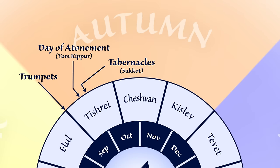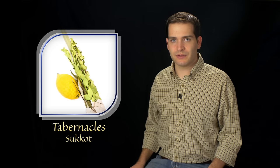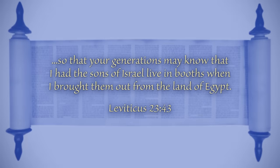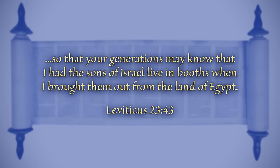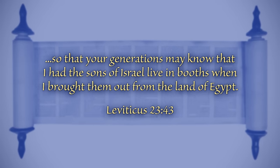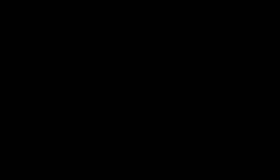The Feast of Tabernacles, also known as Sukkot, or the Feast of Booths, starts on the 15th of Tishri and lasts seven days. It was a time of worship and festivities during which the people lived in temporary booths, or tents, that they made out of branches. God said this was, so that your generations may know that I had the sons of Israel live in booths when I brought them out from the land of Egypt. This week-long feast also symbolizes the time of God dwelling with his people.